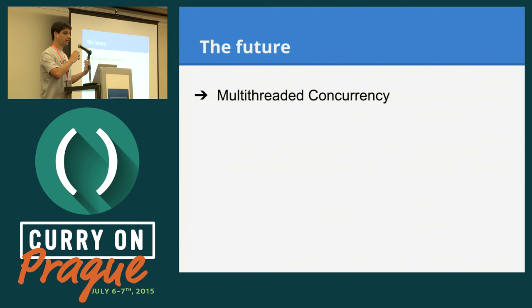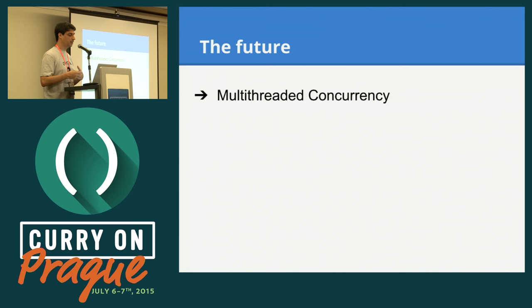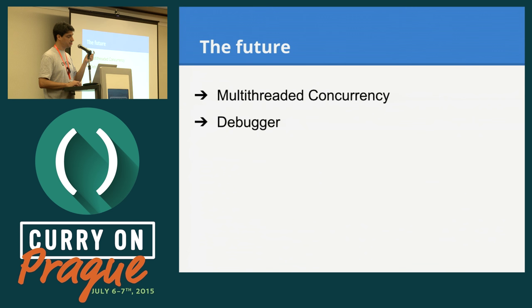About the future — right now all the concurrency happens on a single thread. This is still really efficient; on this laptop I can run an HTTP server that responds to about 60,000 requests per second. But we want to add multi-thread support to take advantage of all CPU cores. We also have only a very simple debugger right now, but we are working on that. And we're working on frameworks and libraries.